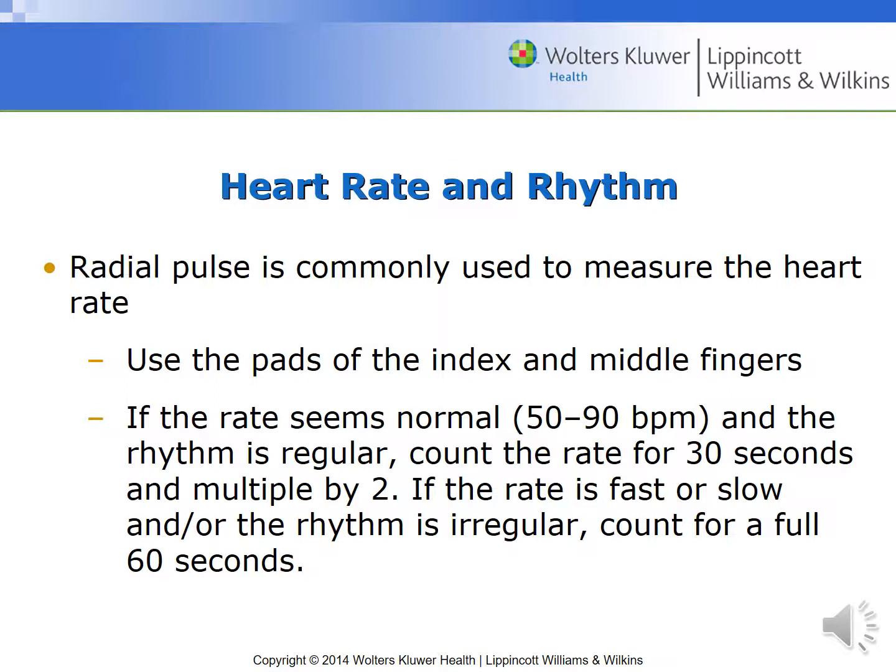We typically use the radial pulse to measure the heart rate. If you're assessing the radial pulse and the rate is between 50 to 90 and the rhythm appears to be regular, you can count the rate for 30 seconds and multiply by two. However, if the rate seems too fast or too slow, or if the rhythm is a little irregular, you want to count for a full 60 seconds. A patient with atrial fibrillation, where it's regularly irregular, would also require a full 60-second count.